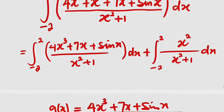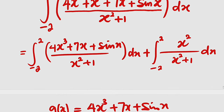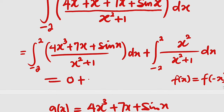Now let us test the other function. We don't even have to spend much time: plugging negative x in place of x in x²/(x²+1), (−x)² is still positive x², so everything remains the same. Therefore if we call this f(x), then f(negative x) = f(x) — it is an even function. So the result is 0 plus 2 times the integral from 0 to 2 of x²/(x²+1) dx.